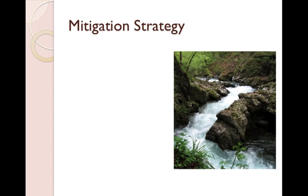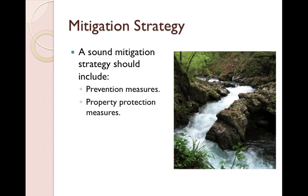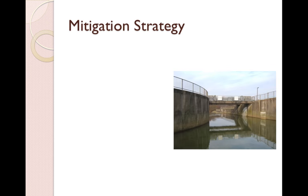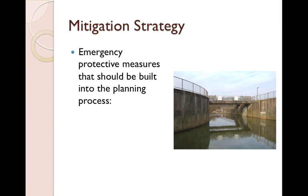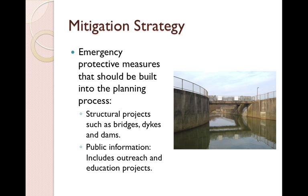A sound mitigation strategy should include prevention measures, property protection measures, natural resource protection measures, and emergency services measures. Emergency protective measures that should be built into the planning process include structural projects such as bridges, dikes, and dams — these have become more and more prevalent as we've had flooding with disasters like Katrina. And public information, which includes outreach and education projects.